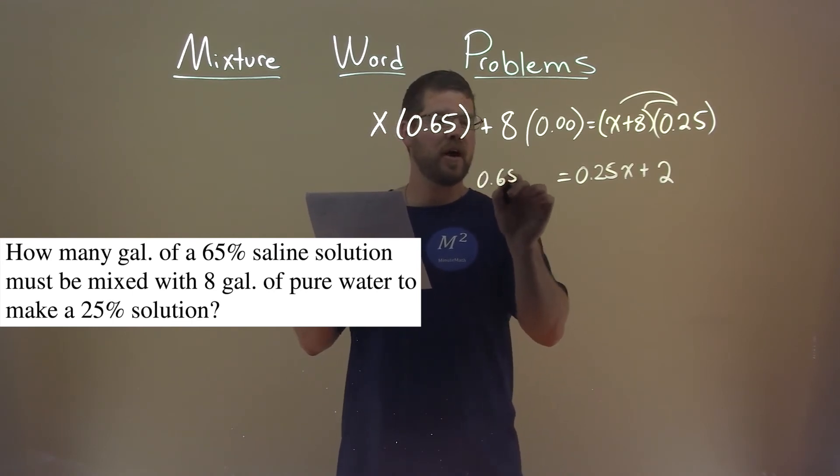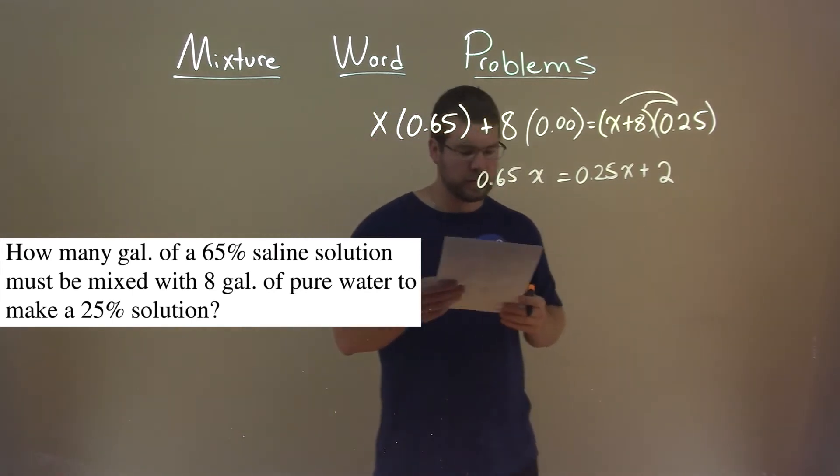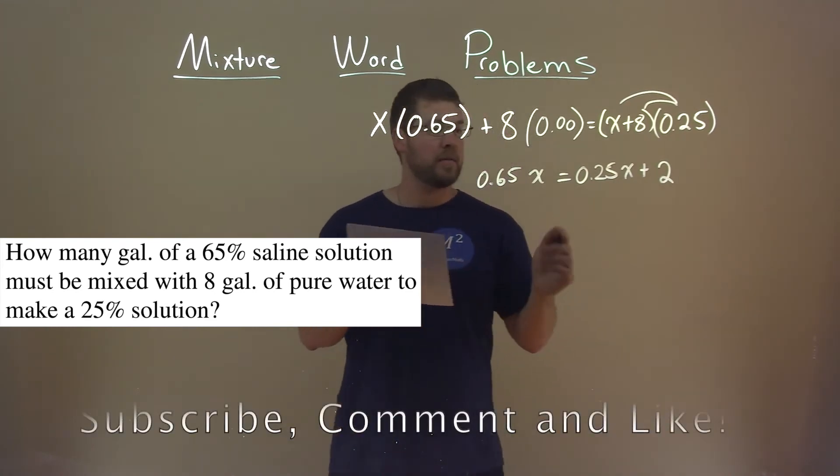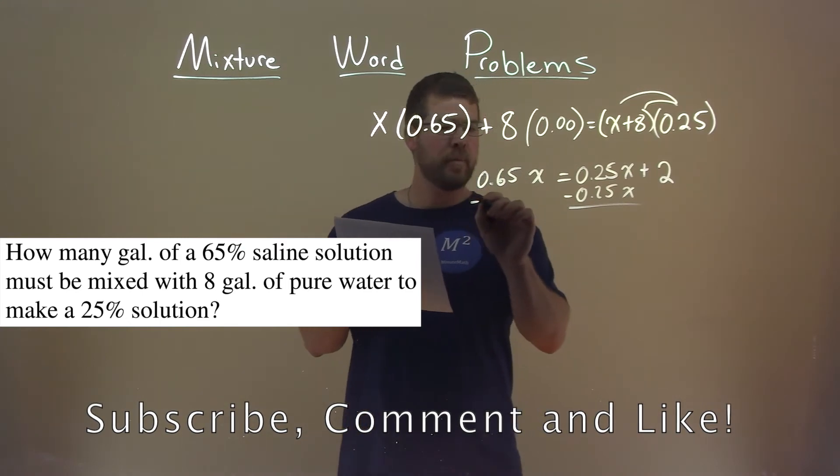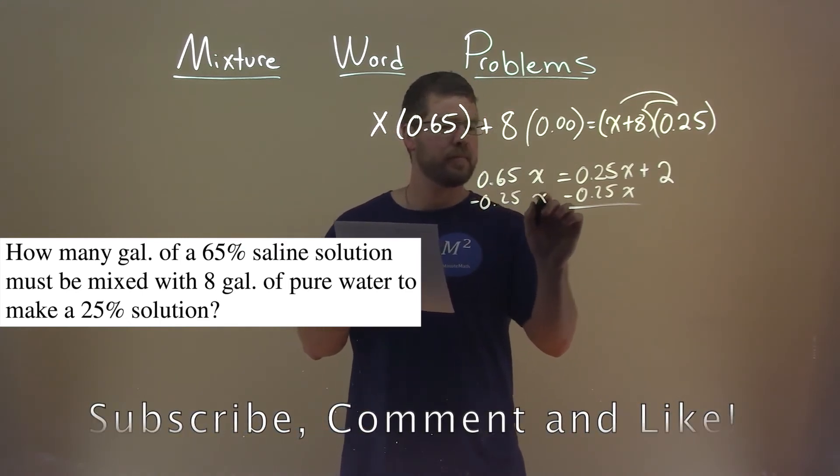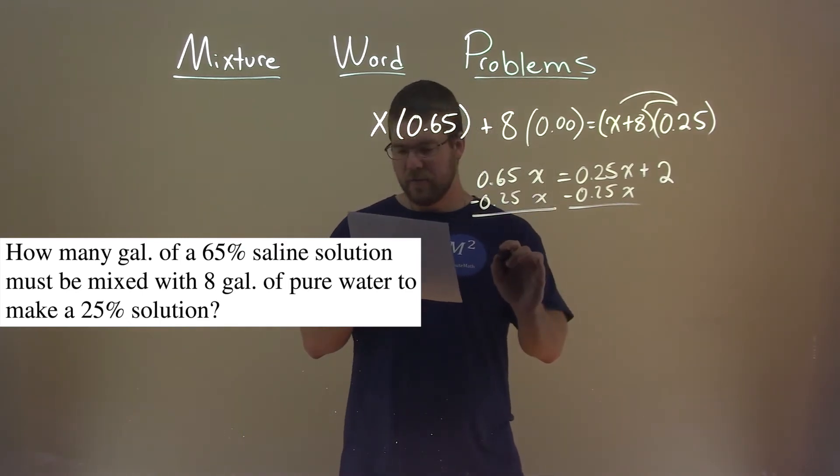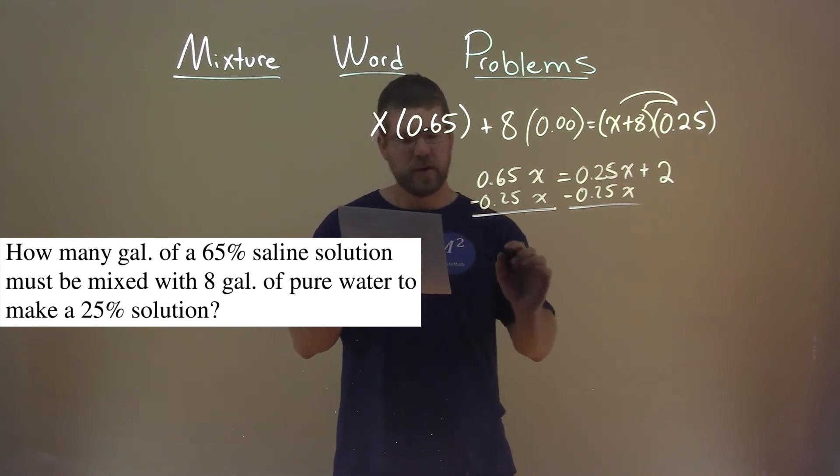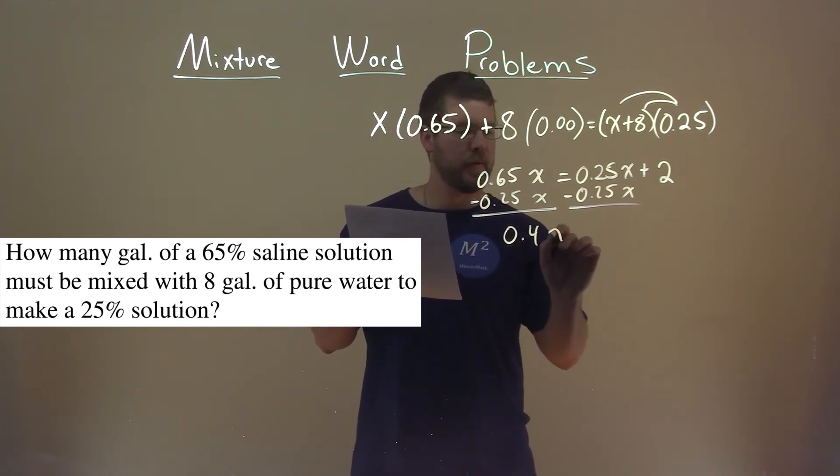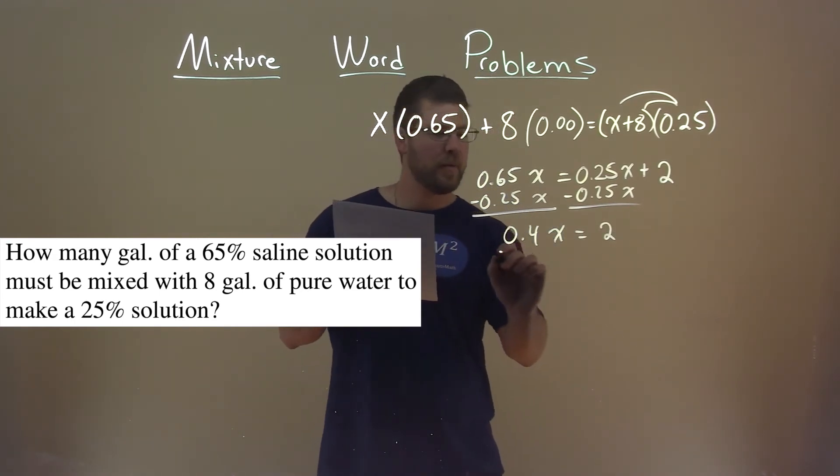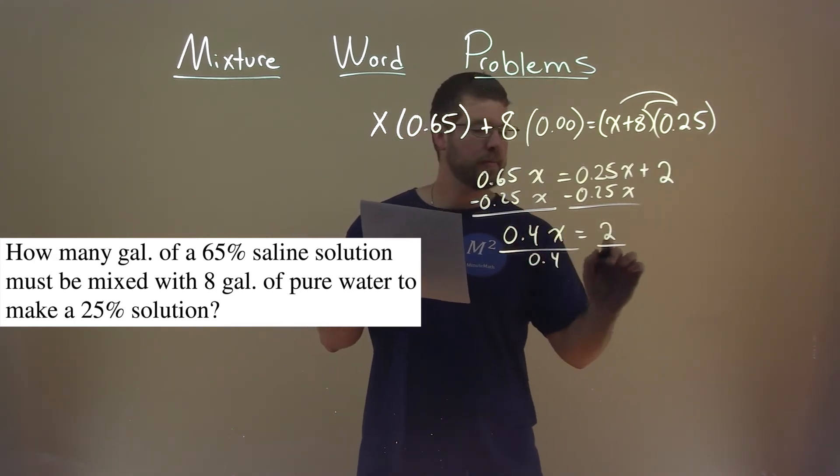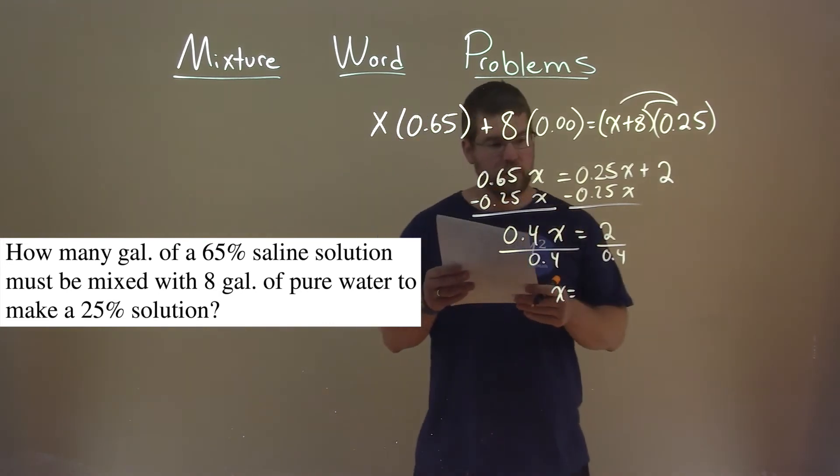0.65X. Now, we're going to combine our like terms. Subtract the 0.25X to both sides. And we have 0.65 minus 0.25 is 0.4X equals 2 left over. Divide both sides by 0.4. We have X equals 2 divided by 0.4, which is 5.